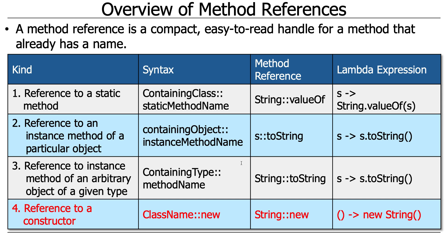The final type of method reference, called a constructor reference, is a reference to a constructor. So if you have a class like String, you say the class name, colon colon, new — for example, String::new. That corresponds to a constructor that will make an instance of that particular class, equivalent to the lambda expression () -> new String.